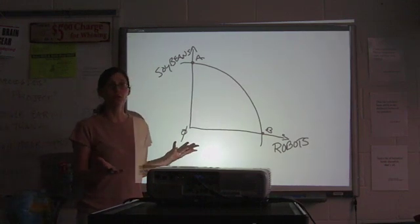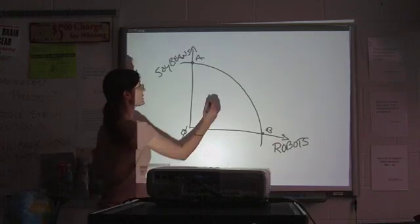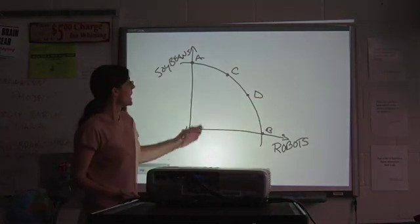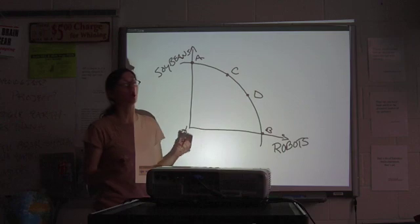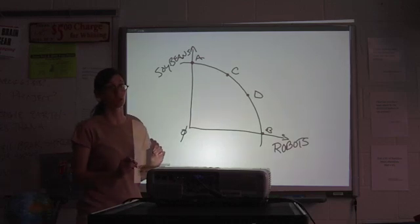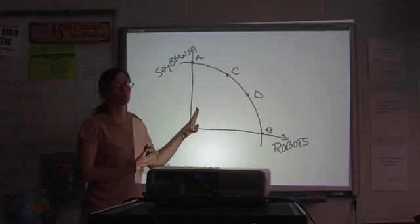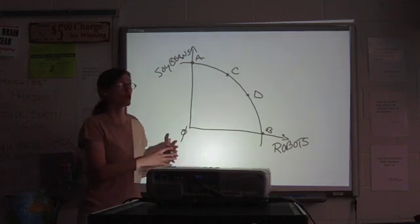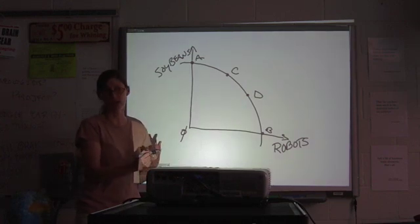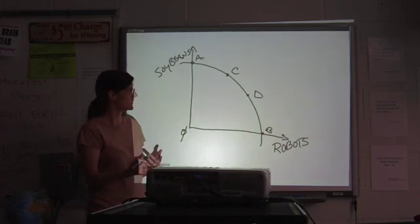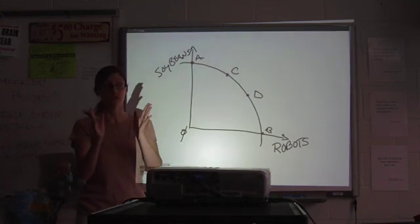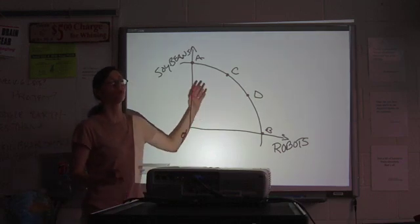All right. Now, a few possibilities. We might be somewhere on the frontier. Let's say we're at point C or point D. Any point that is on your PPF is going to represent productive efficiency. There are two types of efficiency. Productive efficiency means that you are using all of your resources to their greatest benefit. You don't have underemployment or unemployment of any one of your resources. People, machines. You don't have factories sitting idle. You don't have land that's not being used, for example. So, any point on the curve is productively efficient. That's good from one perspective. Okay, so on the curve, you are efficient.